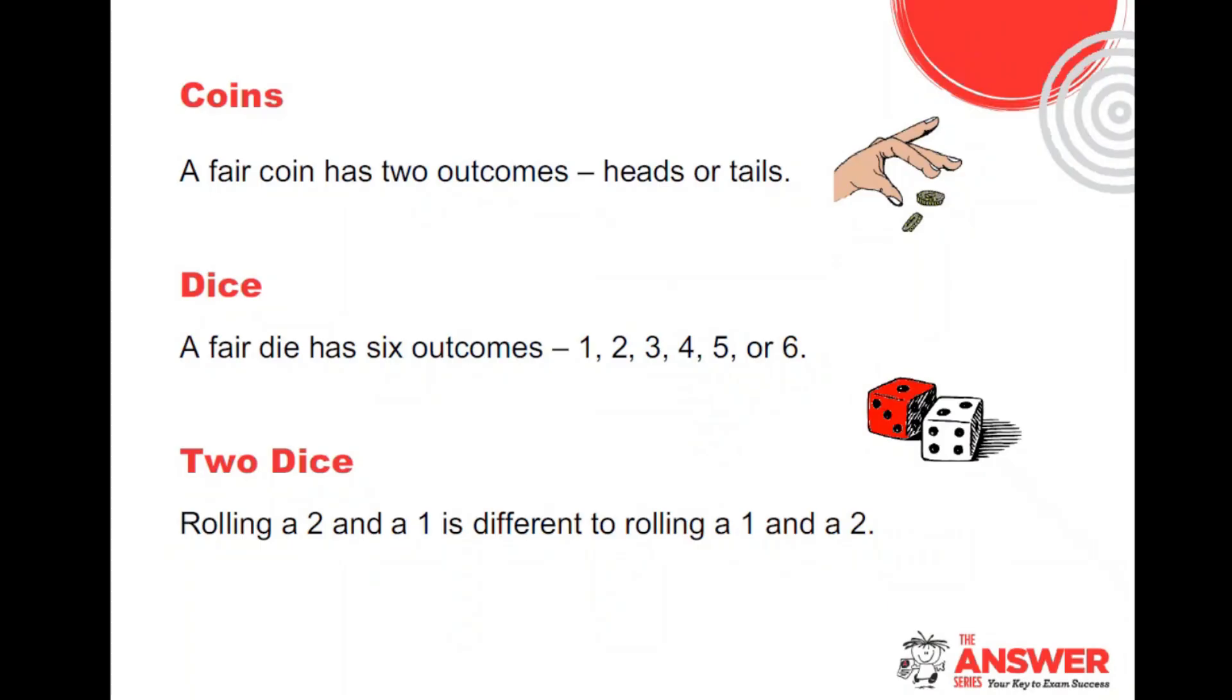A dice, a fair dice has six outcomes: one, two, three, four, five, six. There might be some learners who don't know what dice are, and it might be a case of taking a dice into class and showing them. With two dice, they need to understand that rolling a two and a one is very different to rolling a one and a two. We're going to get an example just now where I'll chat about that.